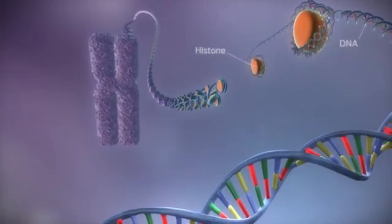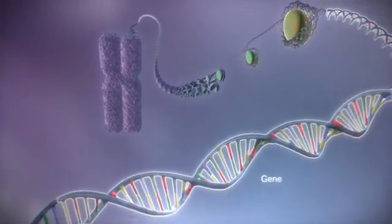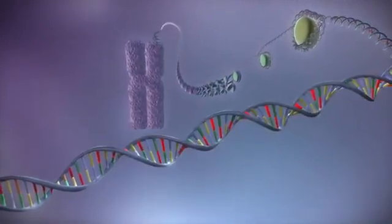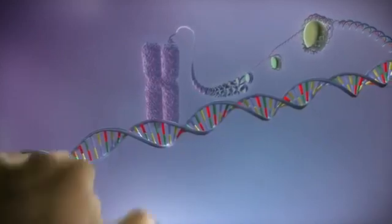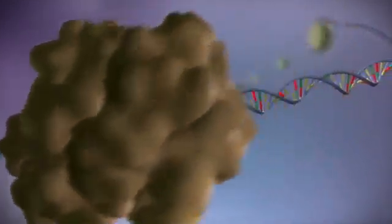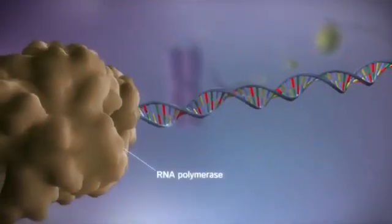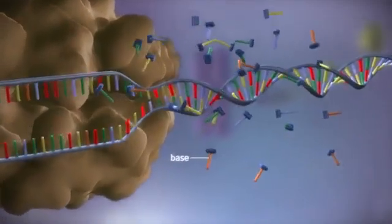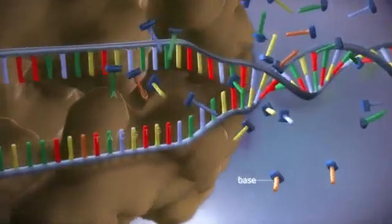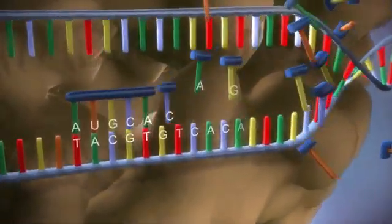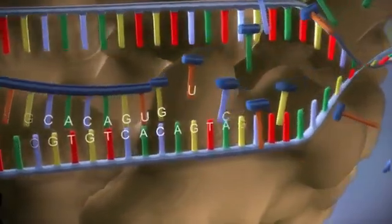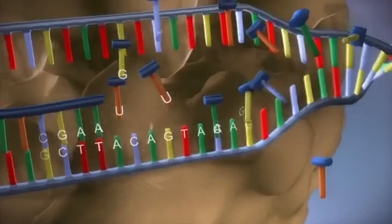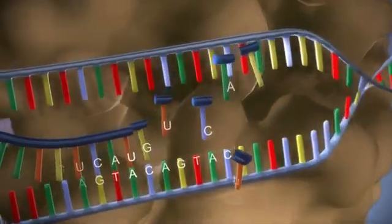Within the DNA are sections called genes. These genes contain the instructions for making proteins. When a gene is switched on, an enzyme called RNA polymerase attaches to the start of the gene. It moves along the DNA, making a strand of messenger RNA out of free bases in the nucleus. The DNA code determines the order in which the free bases are added to the messenger RNA. This process is called transcription.